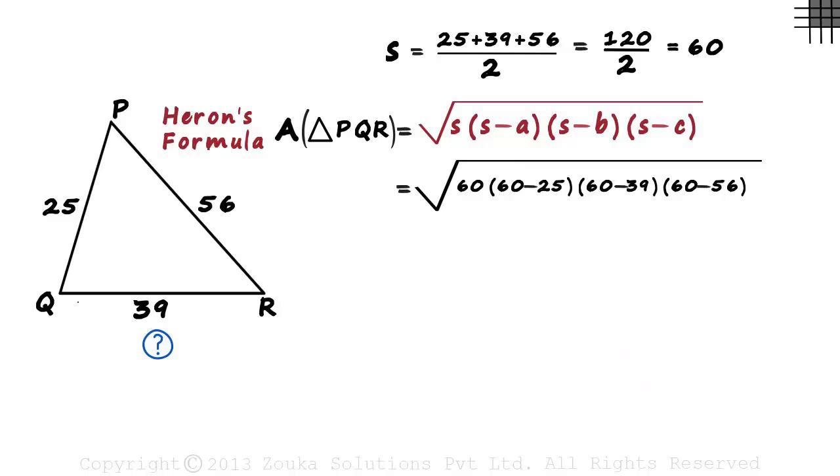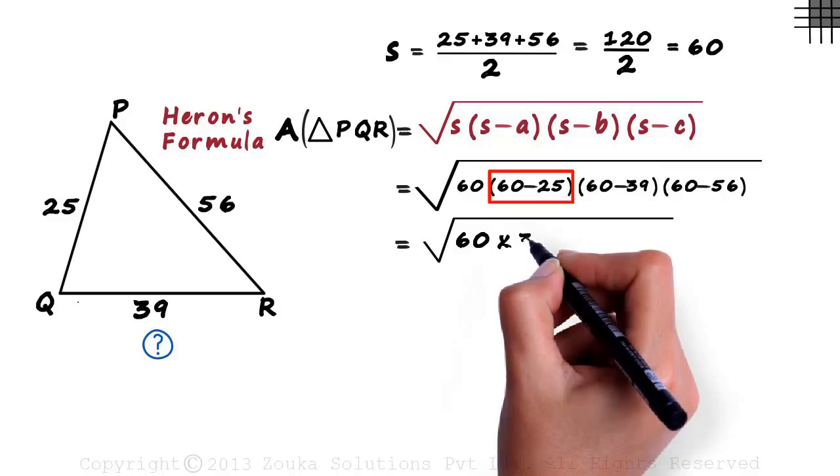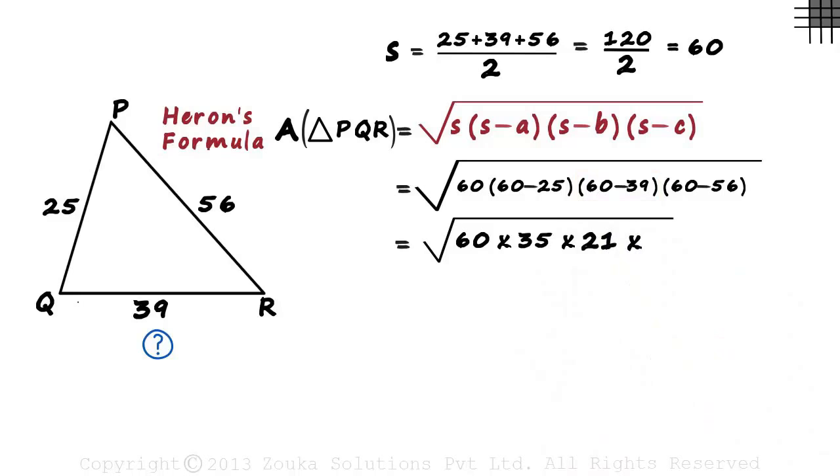That will equal square root of 60 multiplied by 60 minus 25 is 35 multiplied by 60 minus 39 is 21 multiplied by 60 minus 56 is 4.